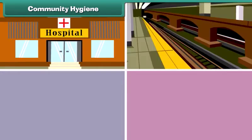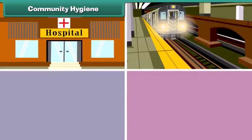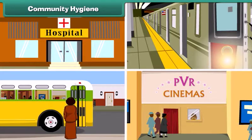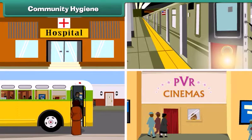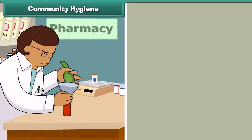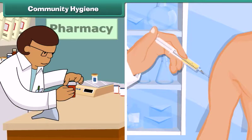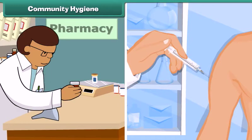Next, we must ensure community hygiene by keeping public places like hospitals, railway stations, bus stands, and cinema halls clean, and by making medicines and vaccines available to people to cure and prevent diseases.